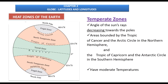The second heat zone is the Temperate Zone. The midday sun never shines overhead in the region between the Tropic of Cancer and the Arctic Circle in the northern hemisphere, and between the Tropic of Capricorn and the Antarctic Circle in the southern hemisphere. The sun's rays are slanting and decrease in intensity towards the poles, so these areas receive moderate temperatures. These two zones together are called the Temperate Zones.